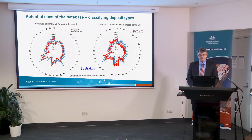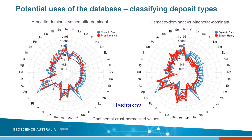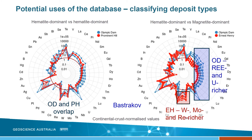Now I'm going to talk about some of the potential uses of the database. One of the more important things is classifying deposit types. Here we have iron oxide copper gold deposits split up into hematite-rich and magnetite-rich types. These are Australian examples showing Olympic Dam compared with Prominent Hill — there's a large overlap between analyses of both deposits. However, comparing Olympic Dam with Ernest Henry, a magnetite-dominant system, we actually see some important differences: Olympic Dam is rare earth element and uranium enriched, whereas Ernest Henry shows higher enrichment in molybdenum, tungsten, and rhenium.